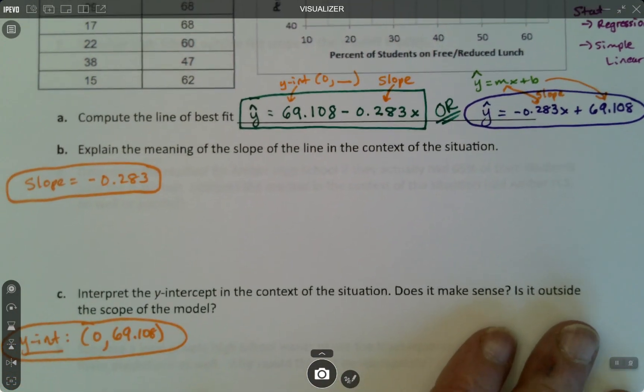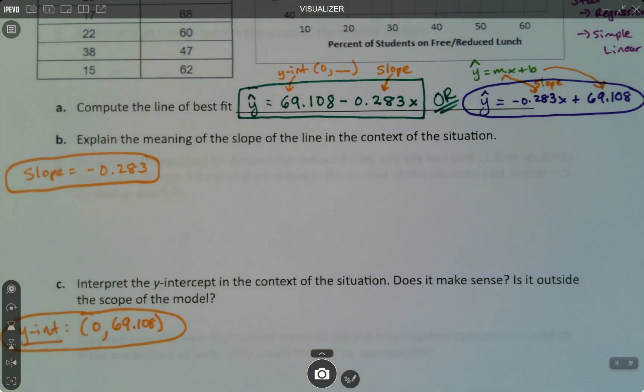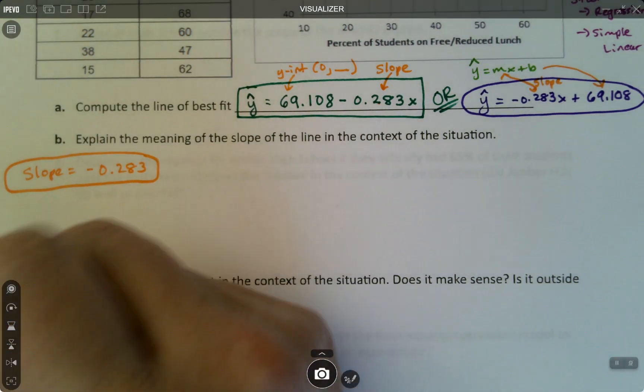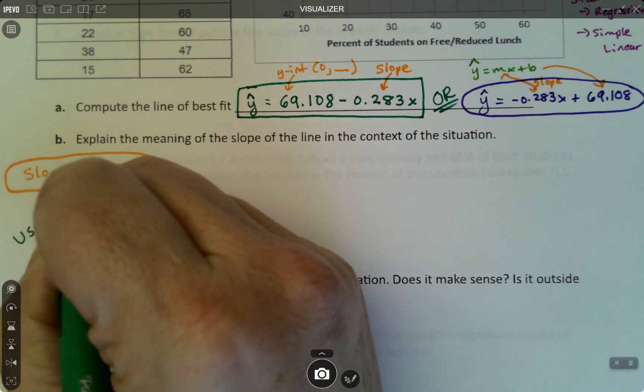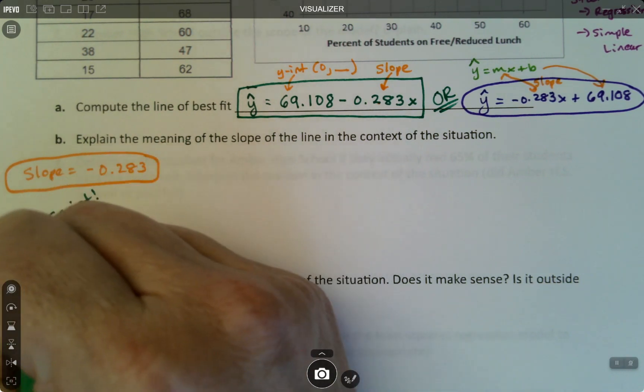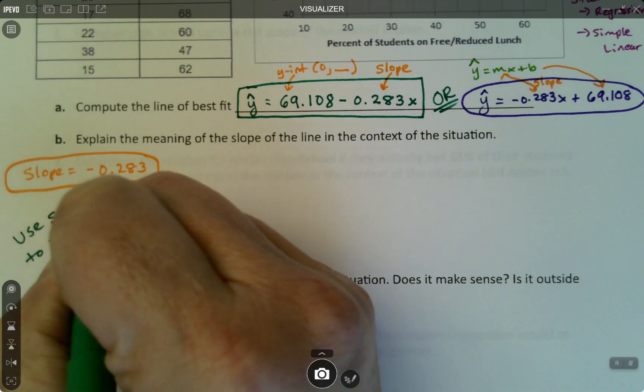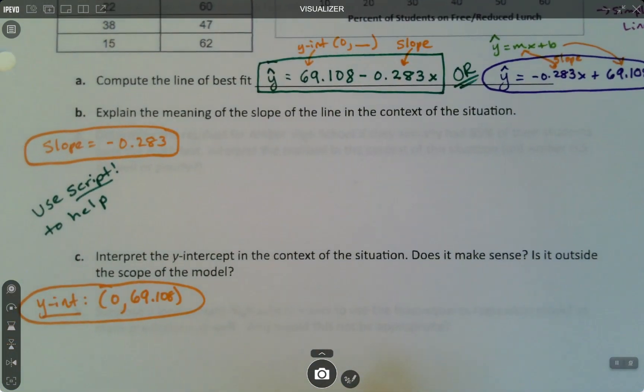Okay, so now let's explain what that slope means in the context of the situation. And of course when they say to explain it, what they really want is for us to use the script. So we are going to use our script. But the script is not perfect.